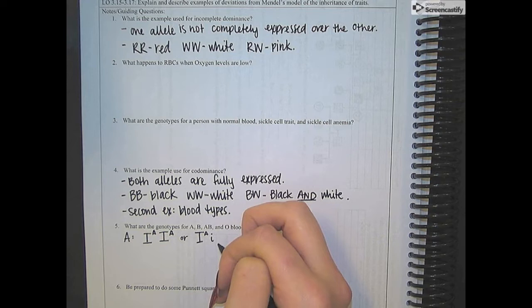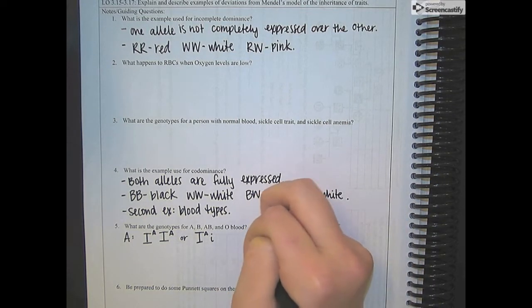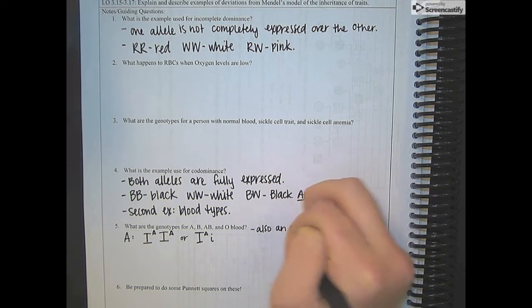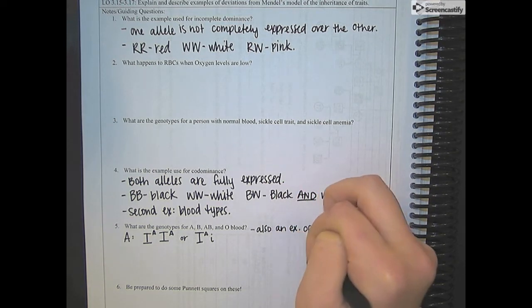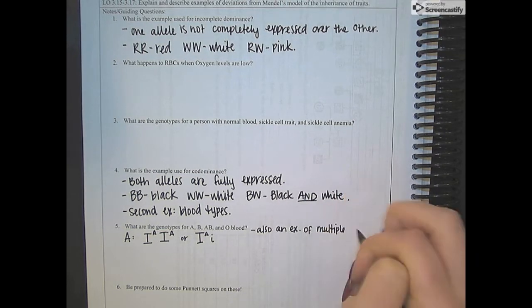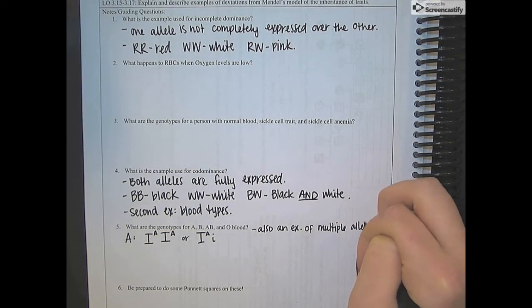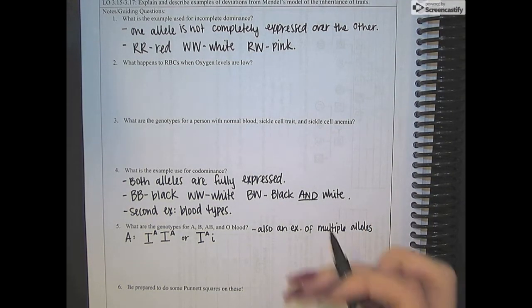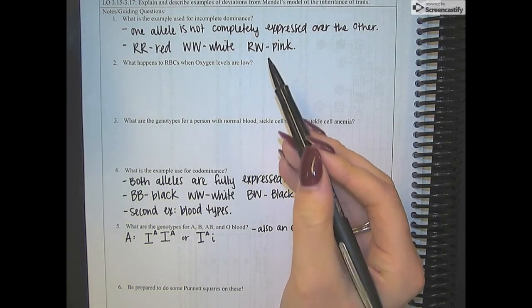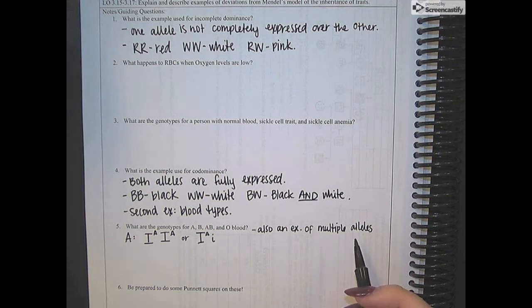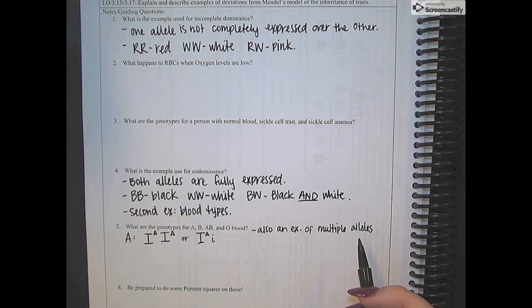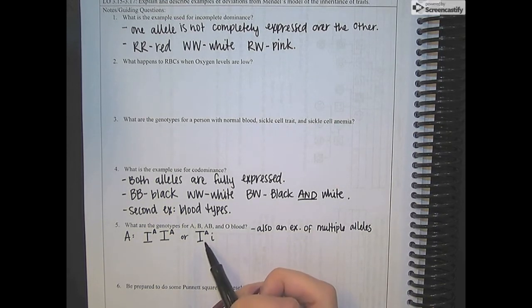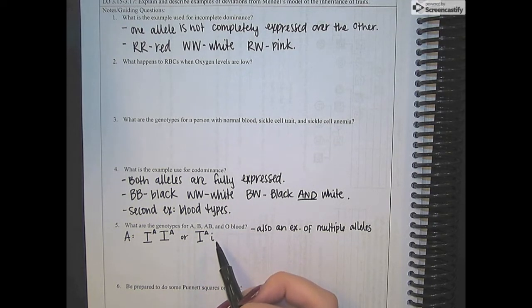So this is also an example of multiple alleles. Typically, you're used to seeing two options for an allele, like up here, either red or white. But in blood type, we have multiple alleles. So we have more than two options. We actually have three options. We have this A, which would be dominant or codominant. And then we have the recessive I for O, which would be no antigens.